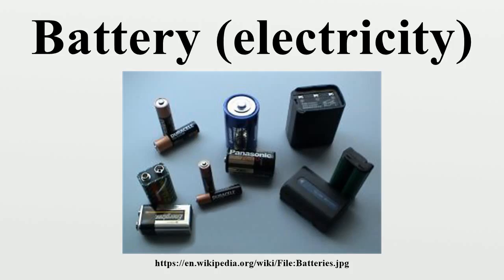Low self-discharge allows secondary cells to be charged prior to shipping. Many types of electrochemical cells have been produced, with varying chemical processes and designs, including galvanic cells, electrolytic cells, fuel cells, flow cells, and voltaic piles.